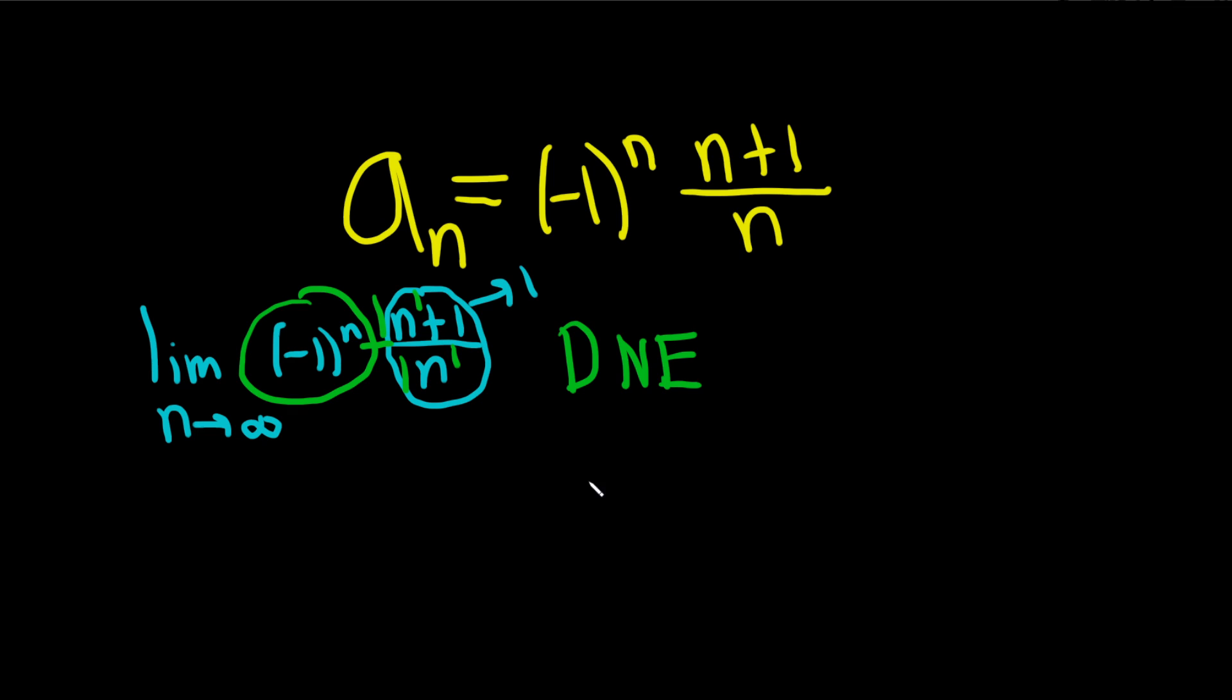So because we didn't get a number, we got a limit that does not exist, we say the sequence diverges. I hope this video has been helpful to you in some way. Good luck.